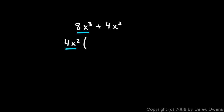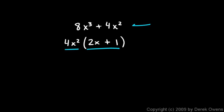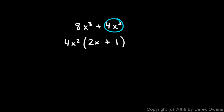I ask myself: what do I need to multiply 4x squared by to give me 8x cubed? Well, 4x squared times 2x will give me 8x cubed. Then I have a plus sign, and what do I need to multiply 4x squared by to give me 4x squared? I just multiply by 1. So the factored form is 4x squared times (2x + 1). Check: 4x squared times 2x is 8x cubed, and 4x squared times 1 is 4x squared. That works.